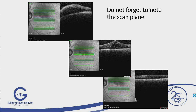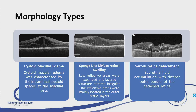Message two: when you do an OCT, take all the sections and see — do not focus on just one. A finding may be a little away from the central area, especially in AMD, so you have to scroll up and down and see the findings. In DME there are different types of findings: cystoid edema, spongiform edema, and serous detachment, each with its own importance.